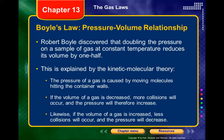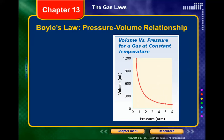Temperature is constant throughout Boyle's law — pressure and volume change. Here's a graph of how pressure and volume change relative to each other. As pressure goes up, volume goes down, and as pressure decreases, volume increases.